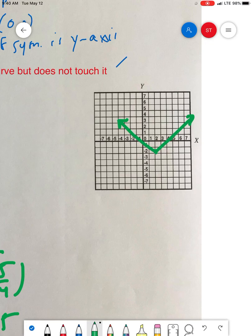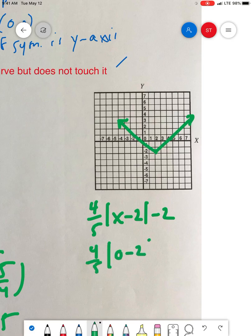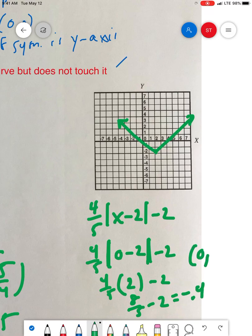What if we wanted to also find the y-intercept? To find the y-intercept, you make x equal to 0. So 4/5 absolute value of 0 minus 2, minus 2. Zero minus 2 is negative 2, and the absolute value of negative 2 is 2. These absolute value bars act like parentheses, so we multiply—you get 8/5. 8/5 minus 2 is negative 1 and 3/5, or negative 0.4. My y-intercept is (0, -0.4). Look at that, we were pretty darn close—it's right there.